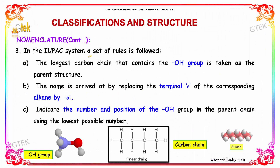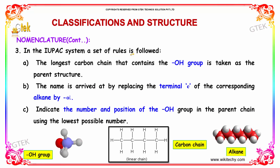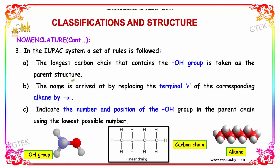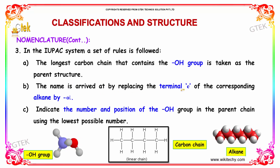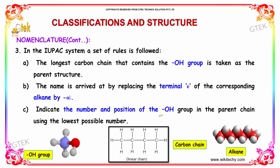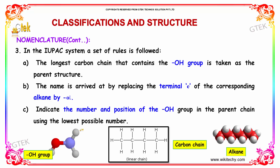In the IUPAC system, a set of rules are followed. The longest carbon chain that contains the OH group is taken as the parent structure. The name is arrived at by replacing the terminal E of the corresponding alkane by -ol. Indicate the number and position of the OH group in the parent chain using the lowest possible number.